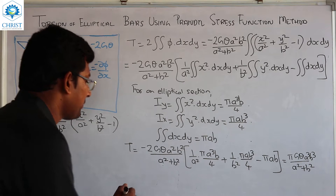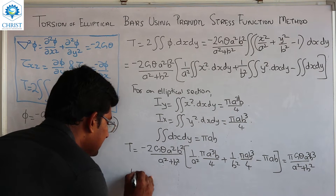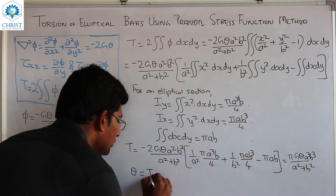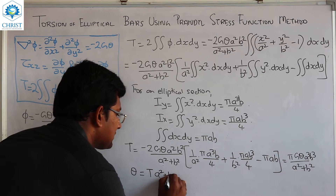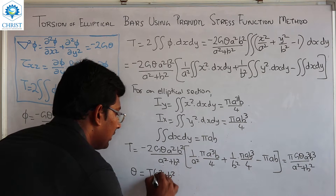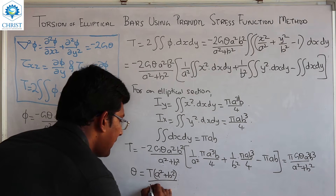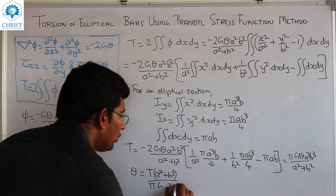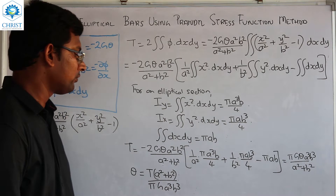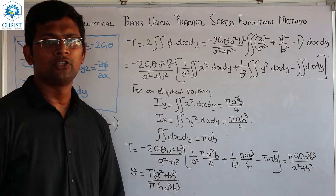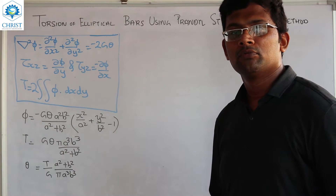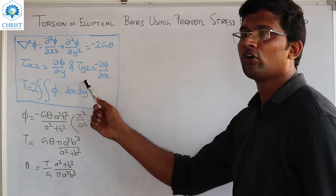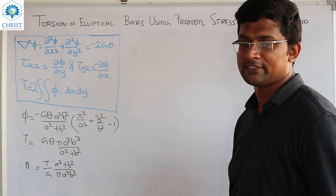Therefore, the angle of twist per unit length θ equals T(a² + b²)/(πGa³b³). This is the expression for angle of twist per unit length. Now moving to the last part: determination of shear stresses τ_xz and τ_yz.